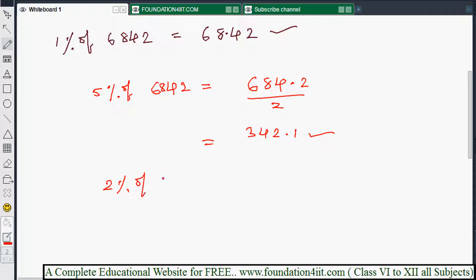Similarly, two percent of the same number 6842. You can guess now: two percent means double of one percent. One percent, the answer is 68.42. Double it means just multiply by two. Then we'll get 136.84.